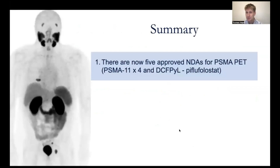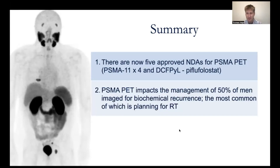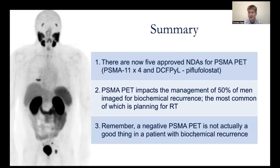In summary, there are now five approved new drug applications for PSMA PET — four for PSMA-11, including approvals at UCSF and UCLA, and two companies have since created kits making PSMA-11 more widely available. There's also an NDA for DCF-PYL or piflufostat, a fluorinated agent used widely in the United States. PSMA PET impacts management in 50% of men imaged for biochemical recurrence, primarily affecting radiation therapy planning. Remember, a negative PSMA PET is not a bad thing — those patients will do better after treatment with no evidence of metastatic disease.